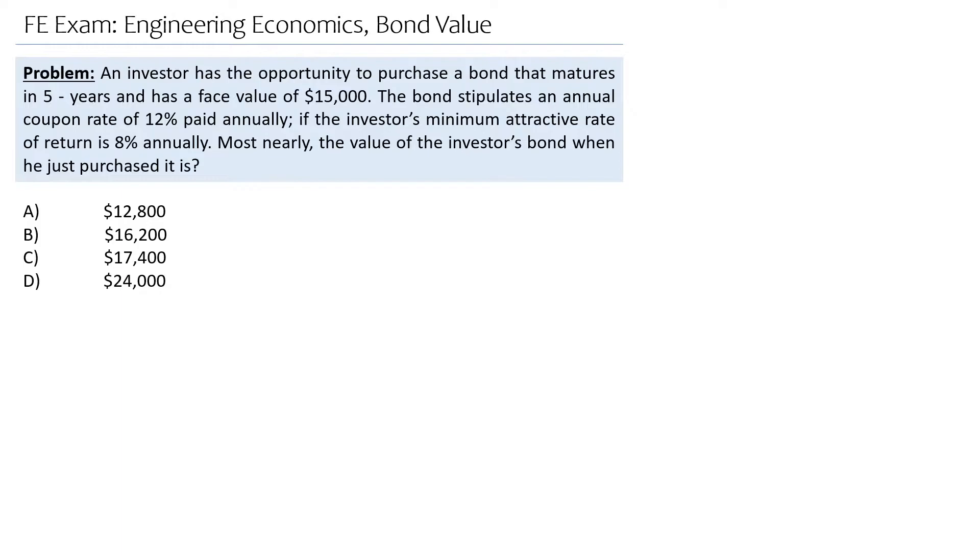A bond is basically an agreement to lend the bond issuer money for a specific length of time. So here we have it as five years. In return, you will receive periodic interest payments, which is 12% of the $15,000 annually, plus a promise to return the face value of the bond when it matures.